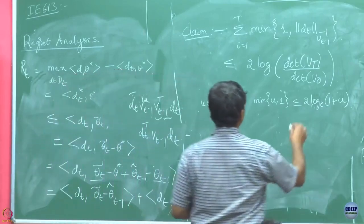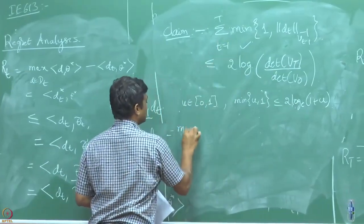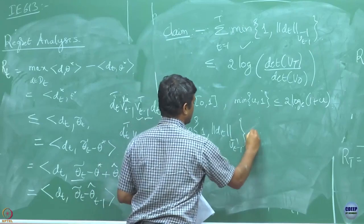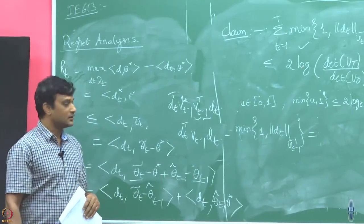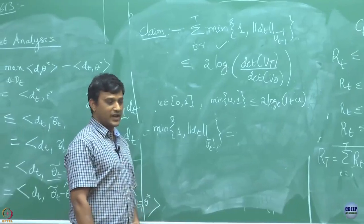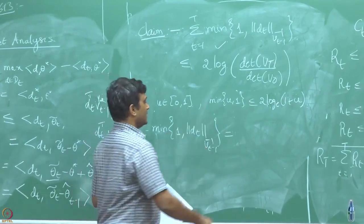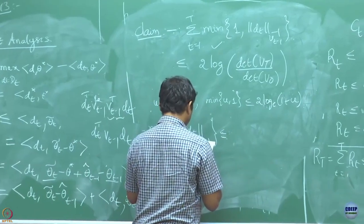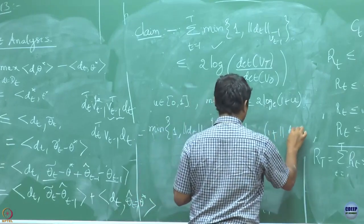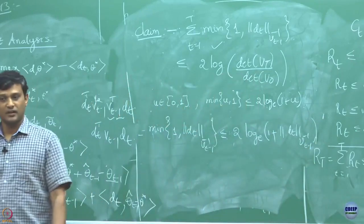First I will use the property that min(U, 1) ≤ 2 log(1 + U) for U ≥ 0. So if I can argue that ||d_t||_{V_{t−1}^{−1}} is between 0 and 1, then I can bound min(1, ||d_t||) by 2 log(1 + ||d_t||_{V_{t−1}^{−1}}). Then summing, using log of product equals sum of logs.